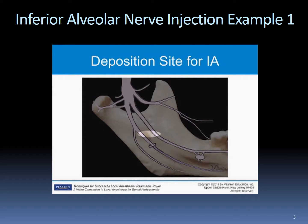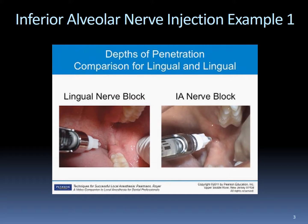Some clinicians give this as a separate injection, which is also acceptable. It may be given on the way in, or it may be given on the way out of the tissue, after the inferior alveolar injection has been administered. For this demonstration, the lingual nerve will not be given as a separate injection, but rather anesthetized along the pathway to the inferior alveolar nerve.